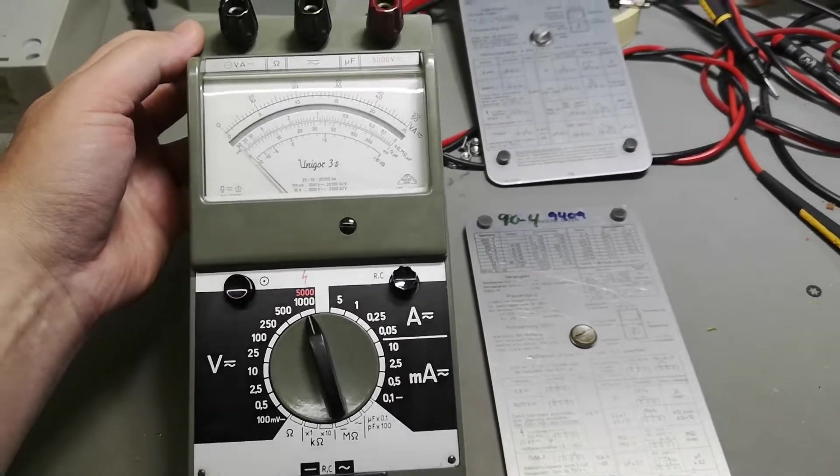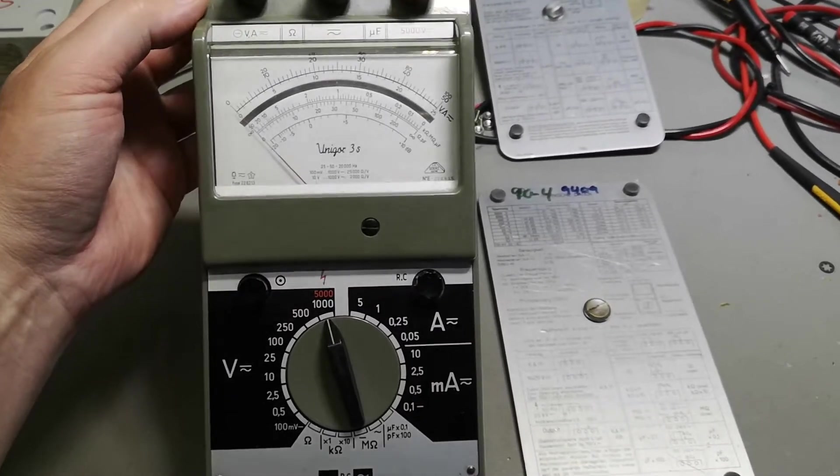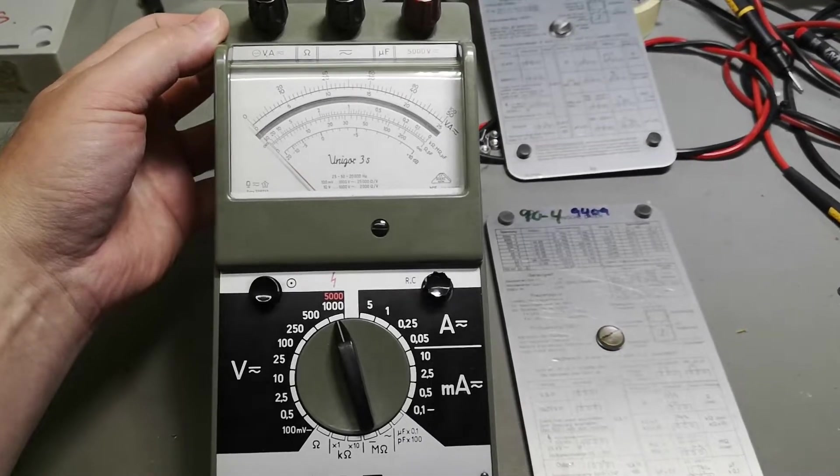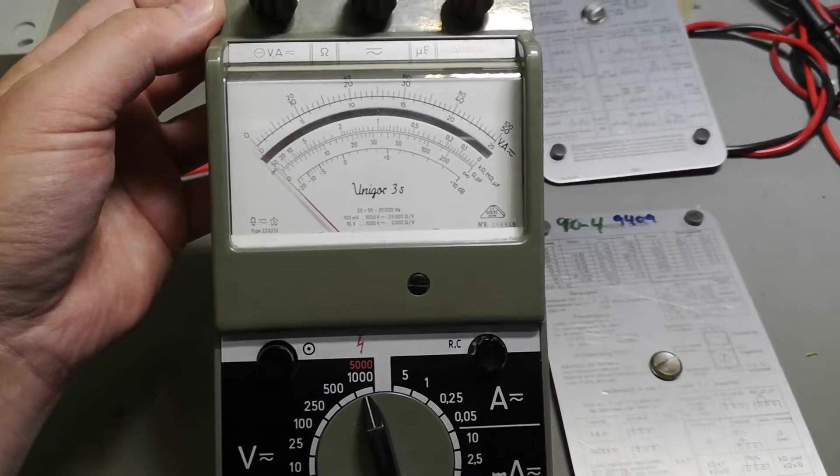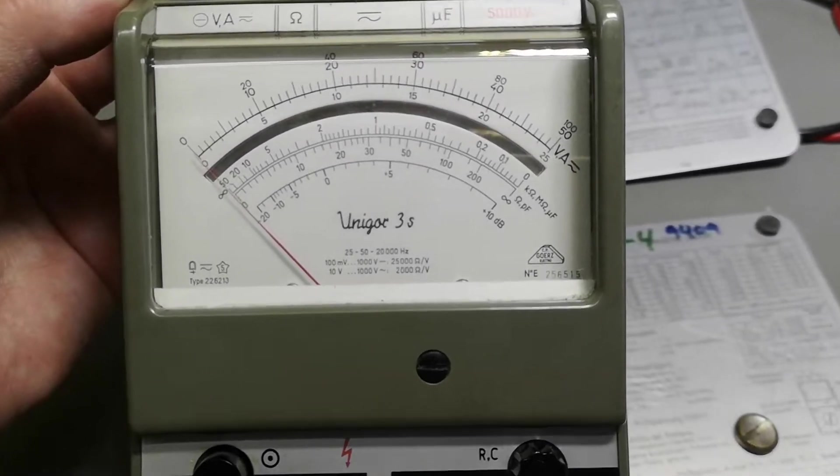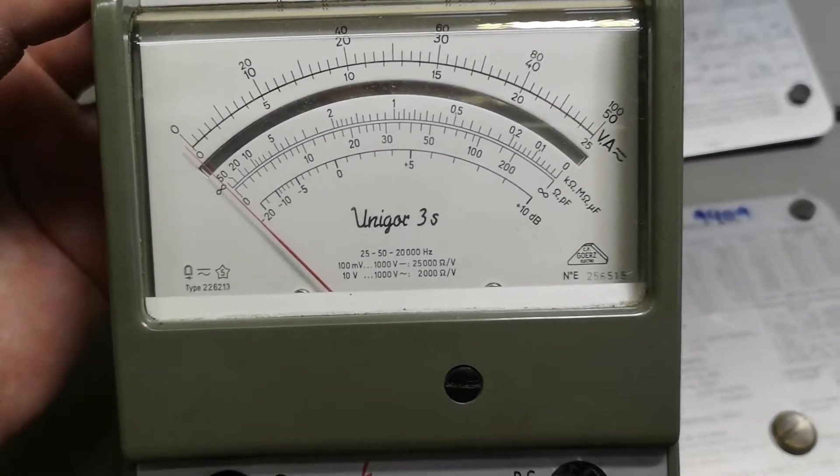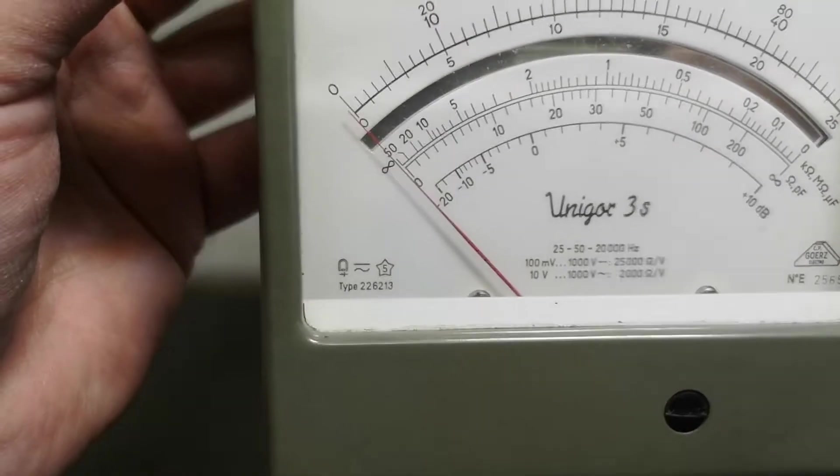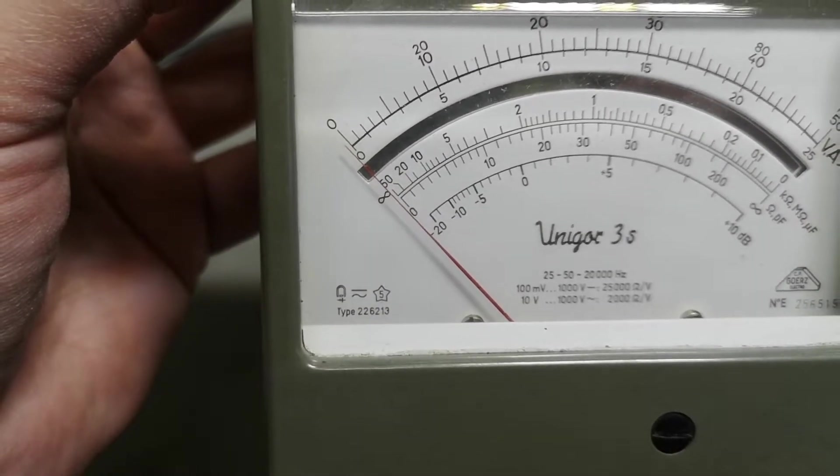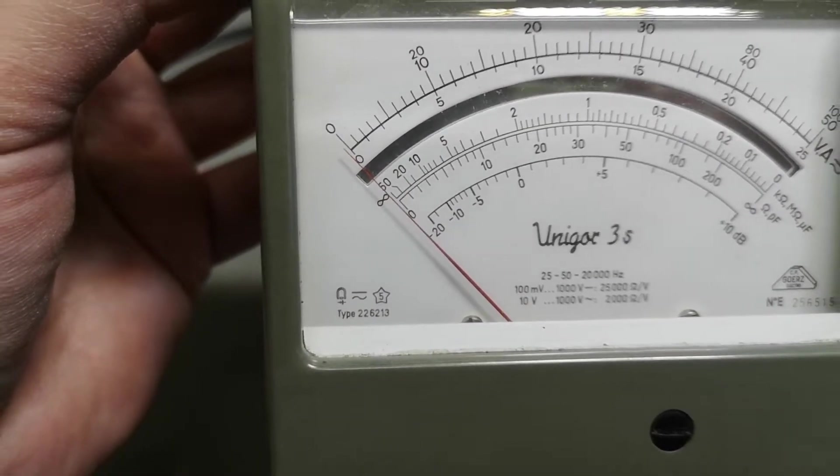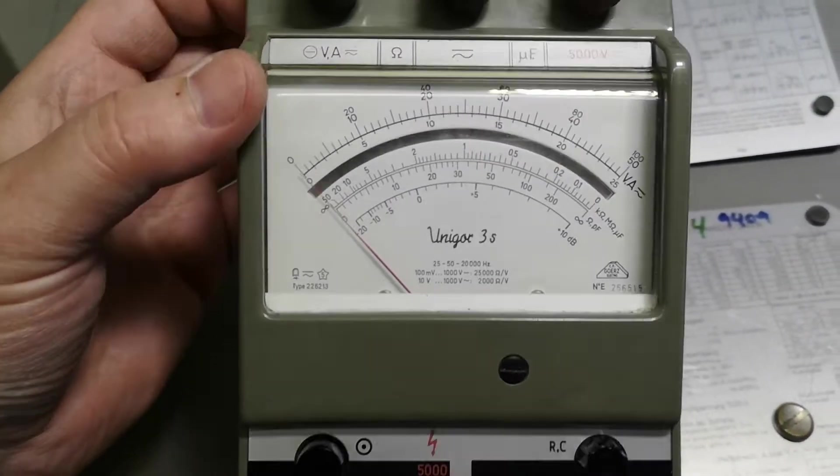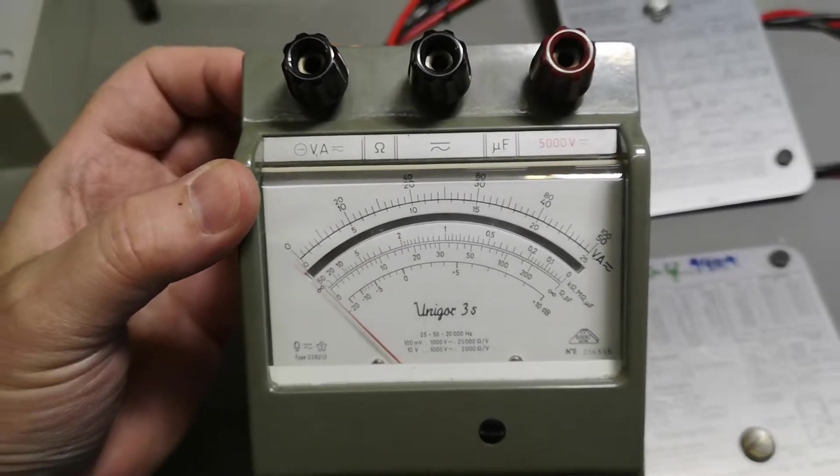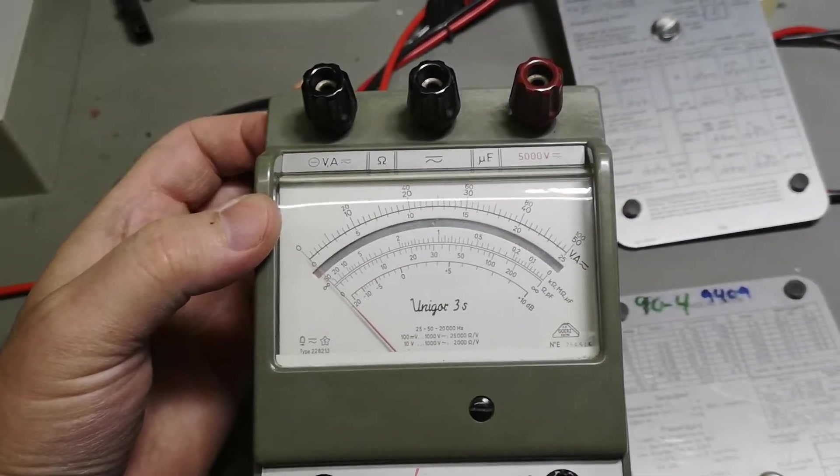Welcome to another test and teardown video. This time it's another Goerz meter, what's Unicorn, but this one is called 3S and the type number is 2262-13. So what is so special or different about this one compared to the other one we just played with?